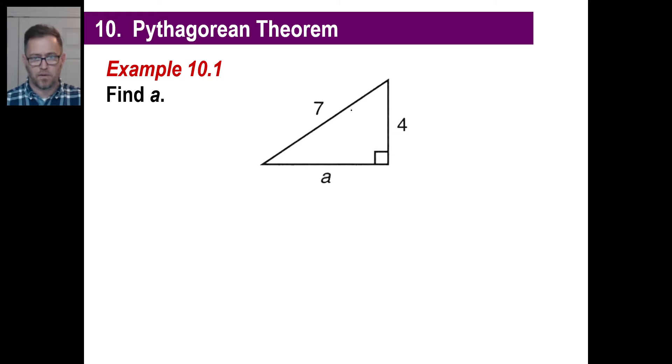Find A. Well, okay. This is an easy one. There it is. No, I'm just kidding. Okay. Well, this is the Pythagorean theorem. It's A squared plus B squared equals C squared. All right? Well, A squared, we don't know. They're asking us to find it. So A squared is that.